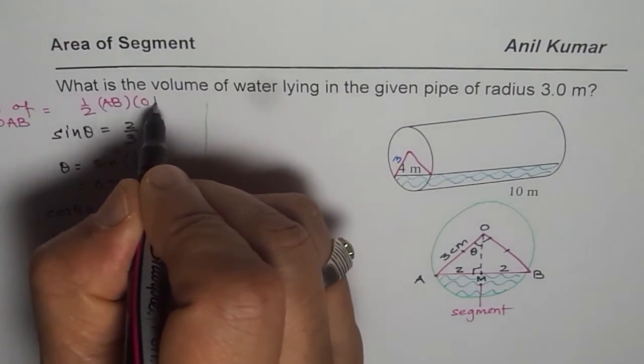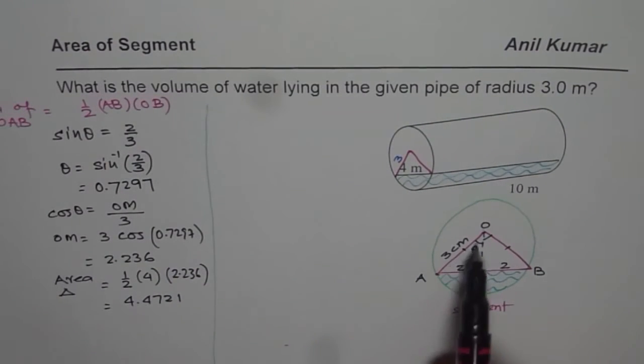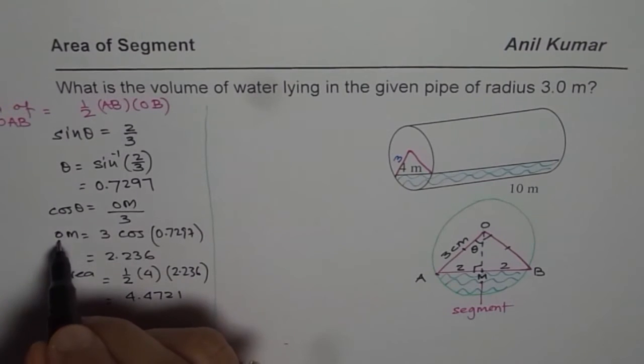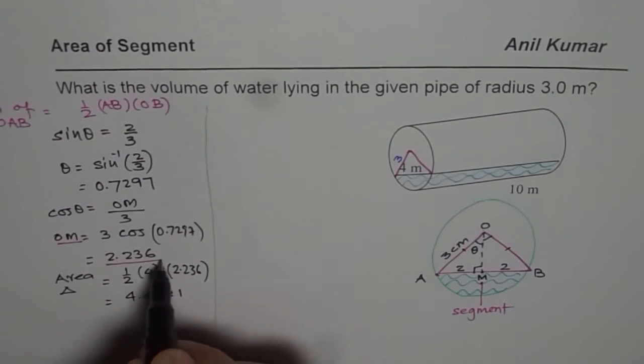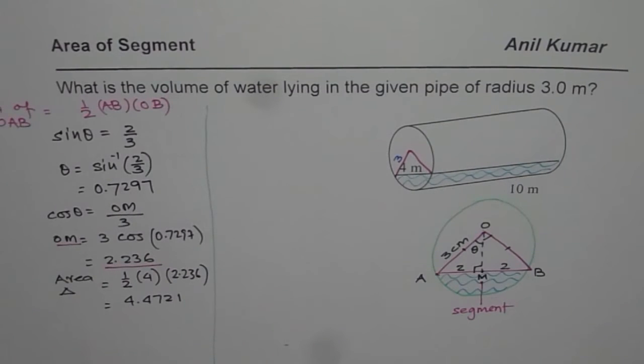So that gives us the area of the triangle. Well, these were too many calculations at one place, I hope you understand what we did. First step was to find area of triangle OAB, so it is half base which is AB times OM the altitude. So AB times OM. Now we did all this to find what is OM, and that was found using cosine. This is the calculation we did.